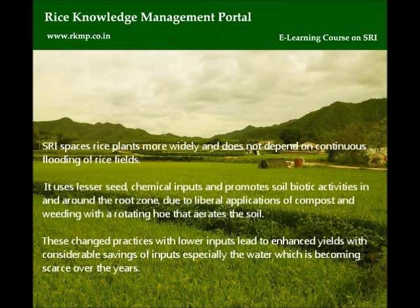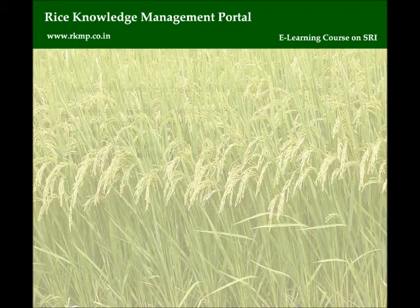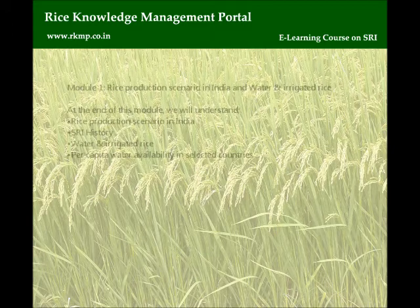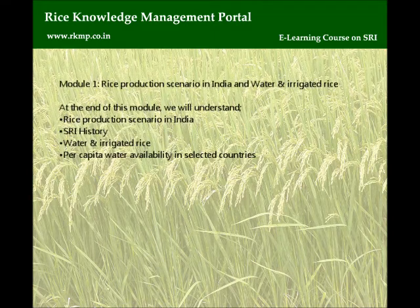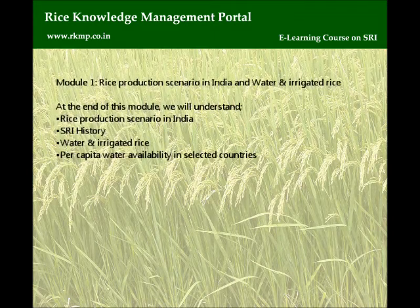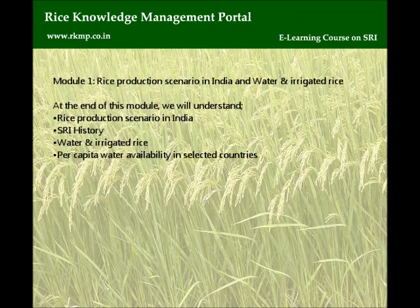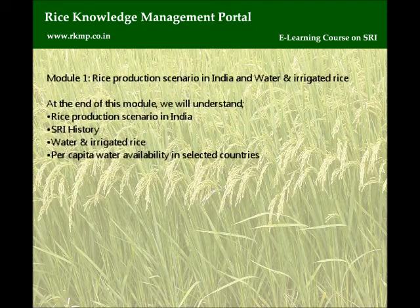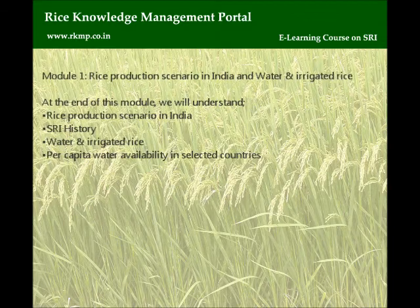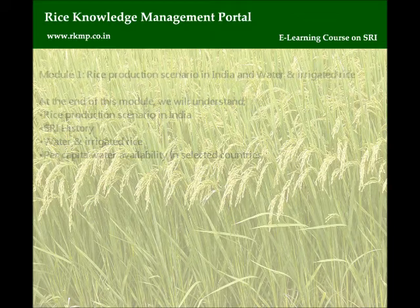These changed practices with low inputs lead to enhanced yields with considerable savings of inputs, especially water, which is becoming scarce over the years. Module 1: Rice Production Scenario in India and Water and Irrigated Rice. At the end of this module, we will understand: Rice Production Scenario in India, SRI History, Water and Irrigated Rice, and Per capita Water Availability in Selected Countries.